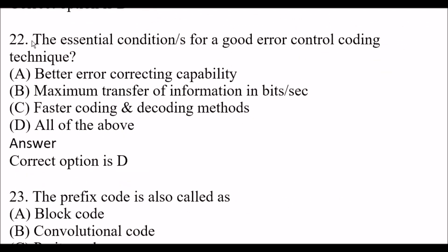Next question: The essential conditions for a good error control coding technique are — Option A: better error correcting capability. Option B: maximum transfer of information in bits per second. Option C: faster coding and decoding methods. Option D: all of the above. The right answer is option D, all of the above.